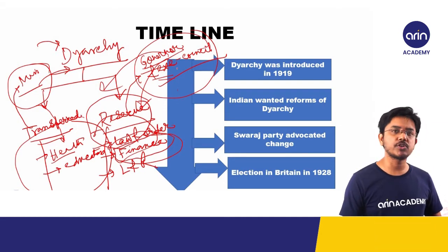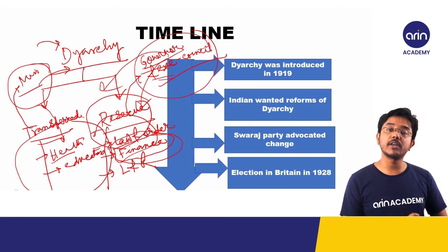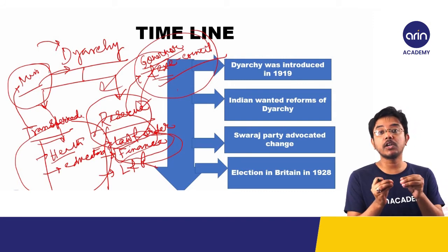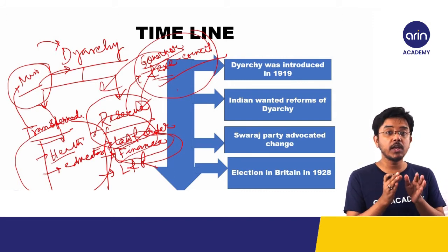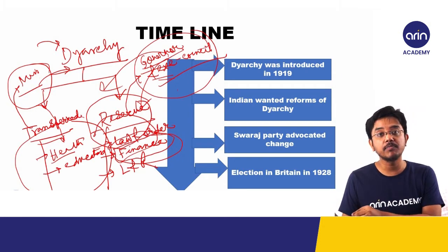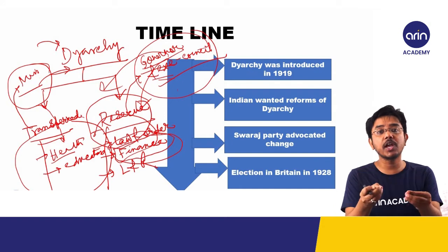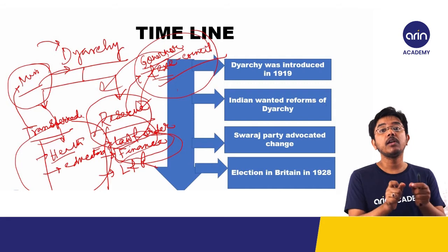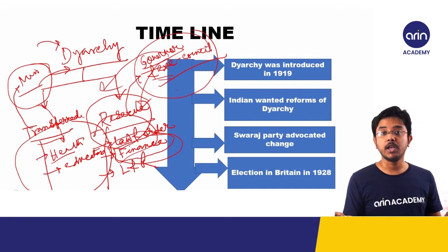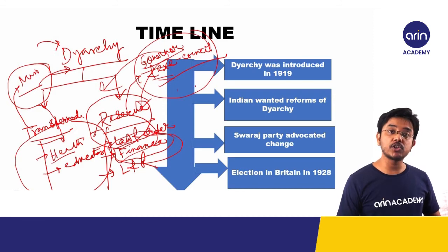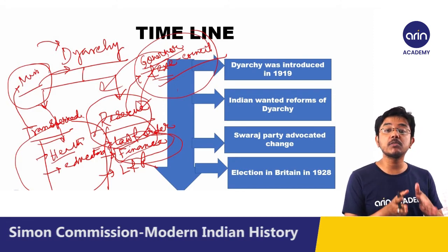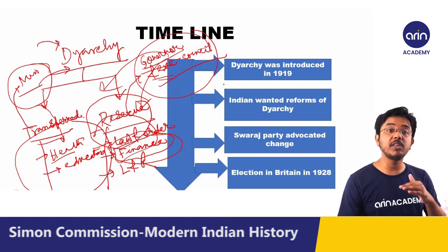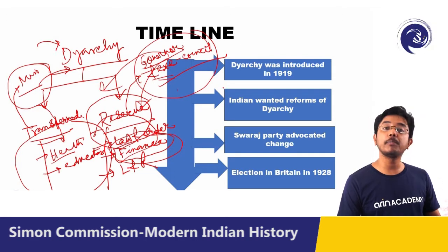The other provision was separate electorate. The Indian National Congress never supported the separate electorate. Through separate electorate, what the British government was trying to do was divide the country into different factions — separate electorate for Sikhs, separate electorate for Christians, separate electorate for Muslims. They are trying to divide the country. So these were the two provisions which Indians strongly opposed in the Government of India Act 1919, and they were advocating in favor of constitutional reforms.